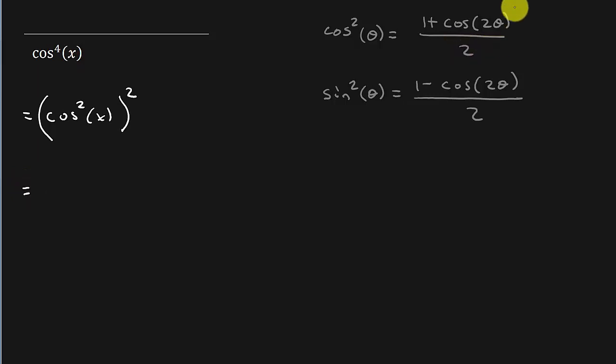All right, so now we can use this formula here. We've got cosine squared x. Well what's cosine squared? It's 1 plus cosine 2x, right? We've got an x. So we've got to do 2 times x over 2.